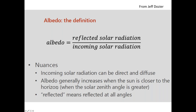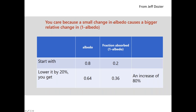Albedo generally increases when the sun is closer to the horizon — when the solar zenith angle is greater — so albedo is also directionally dependent on the sun. Reflected means reflected at all angles, not just beam reflected. Albedo looks small — always between zero and one — but a small change in albedo causes a bigger relative change in (1 - albedo). If you start at 0.8 and lower by 20%, you go to 0.64; your absorbed fraction goes from 20% to 36% — an 80% increase in absorbed energy.